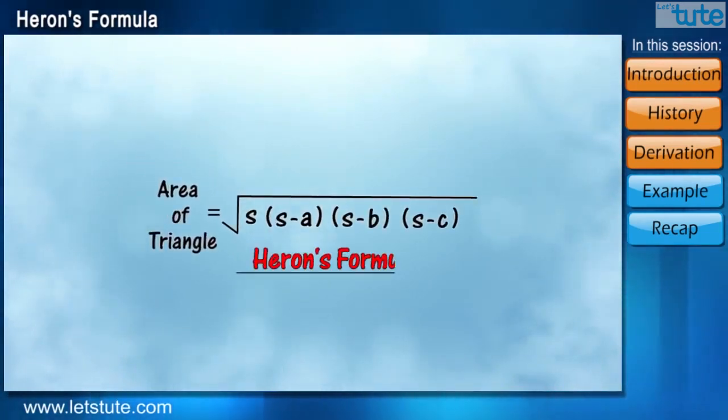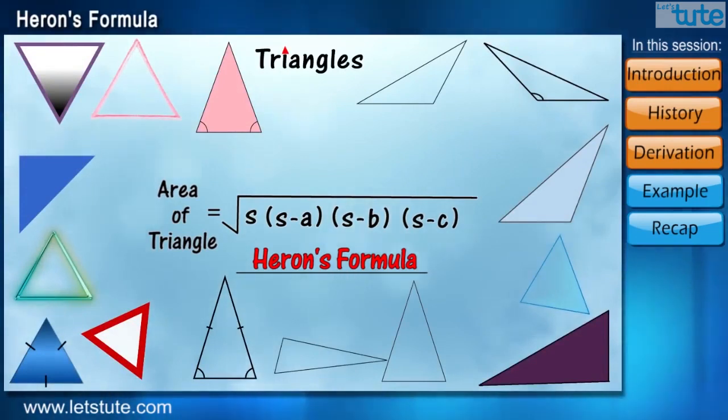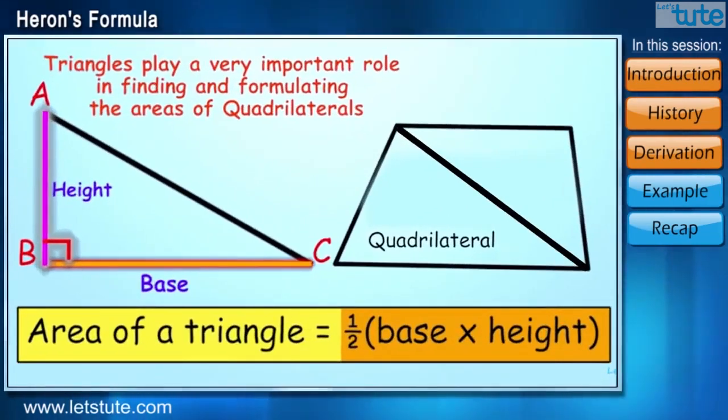Now, this formula is used for all the types of triangles to calculate the area if the value of the sides are given. Do you remember we used the formula half into base into height to find the formulas to calculate the areas of quadrilaterals?